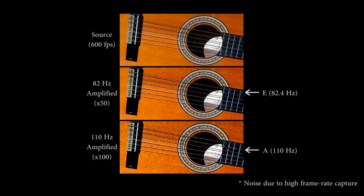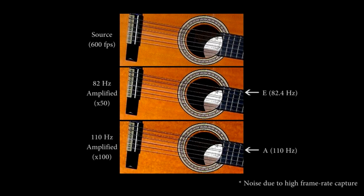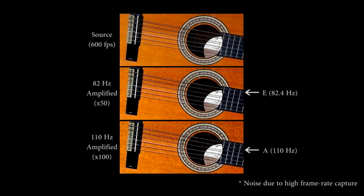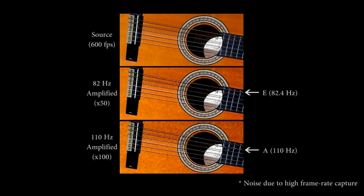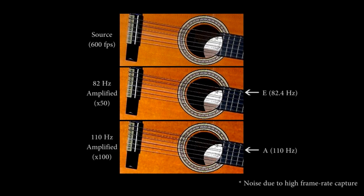In this input high-speed video, the top two strings of the guitar were struck. We show two different amplifications of the same input corresponding to different temporal frequency bands. The middle video shows amplification around 82.4 Hz, the frequency of the A note, and the top string's motion is revealed. At 110 Hz, shown at the bottom, the second string gets amplified.